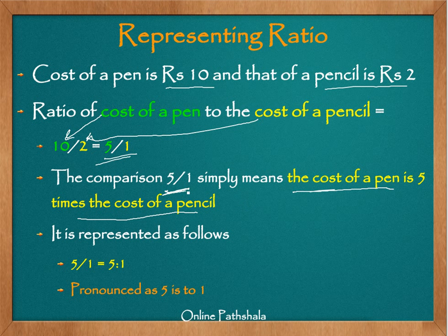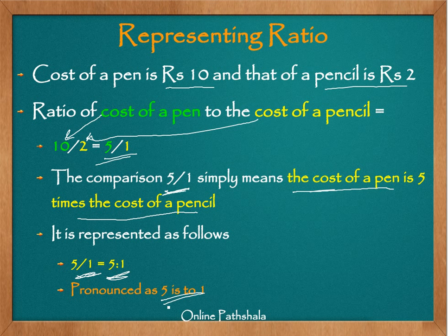We are representing the cost of a pen in terms of the cost of a pencil — 5 times the cost of the pencil. Comparing one quantity in reference to another means we are representing the cost of a pen in terms of the cost of a pencil. We got this as 5 by 1, which is a fractional representation. The other representation is 5 is to 1, pronounced as '5 is to 1'. These are the two ways of representing a ratio: either 5 by 1 or 5 is to 1.